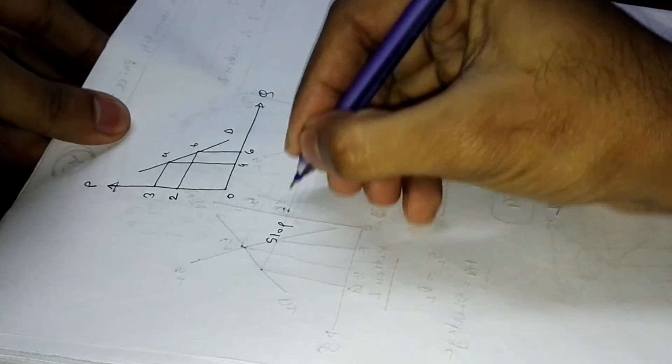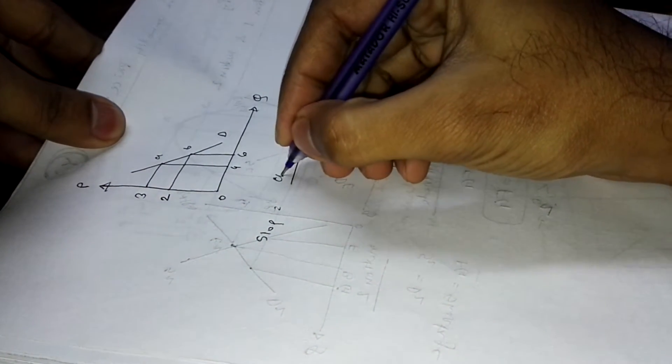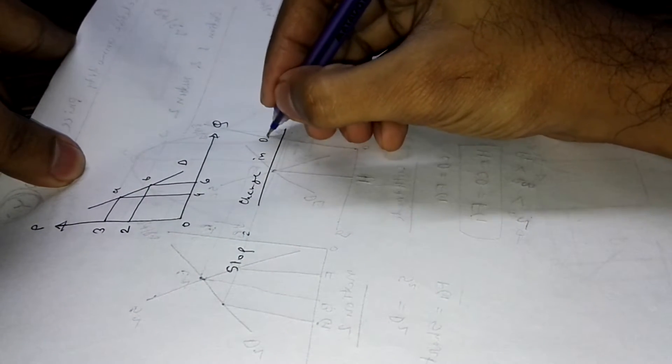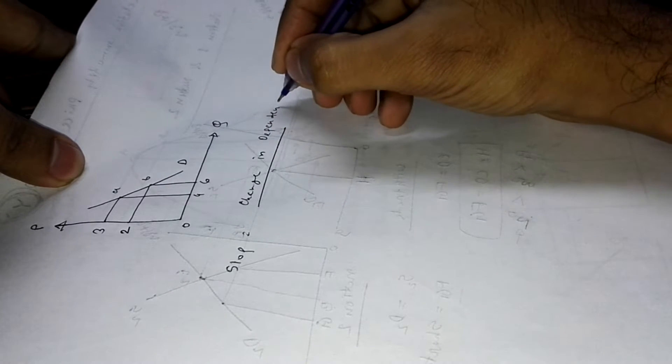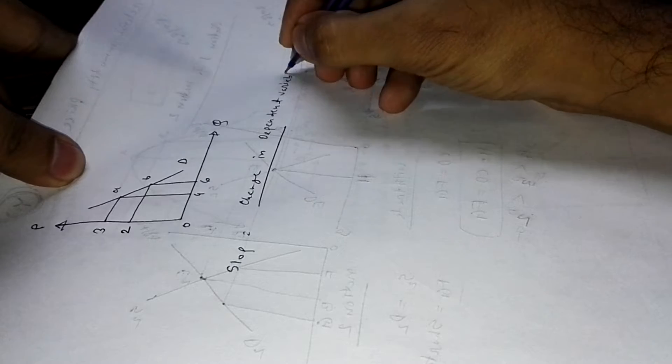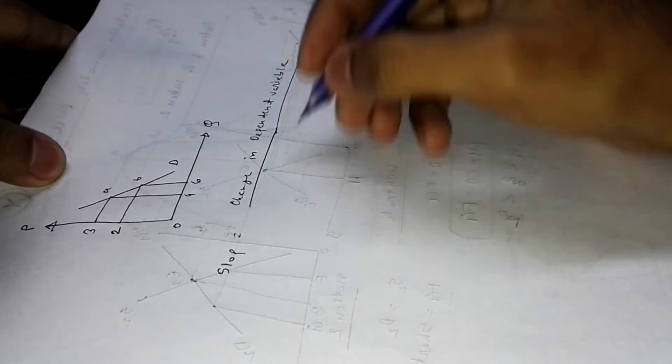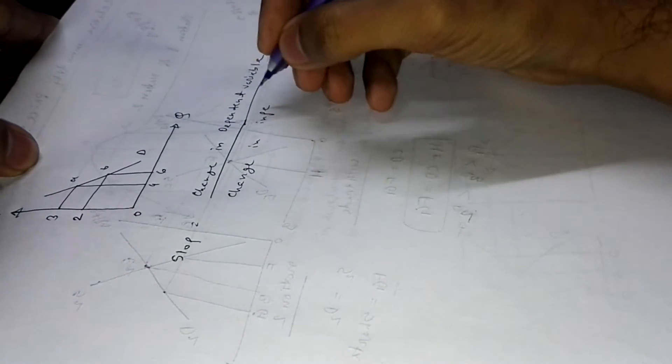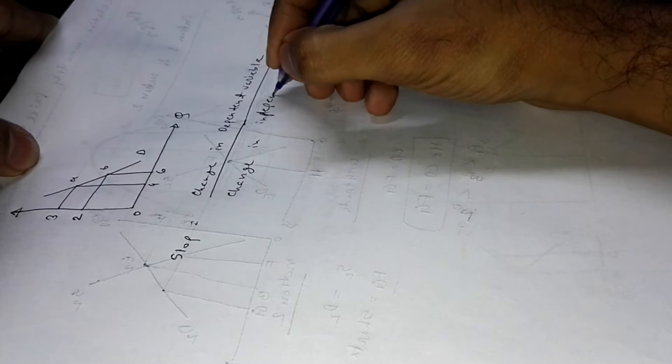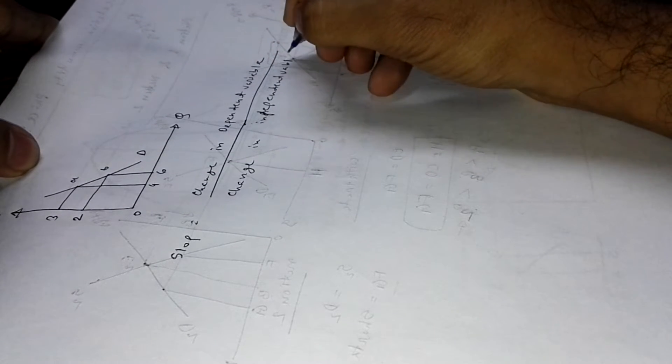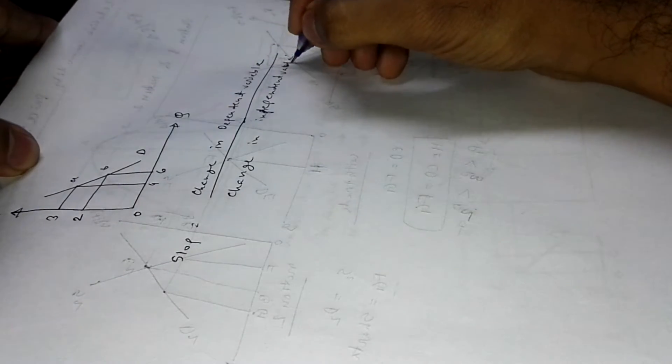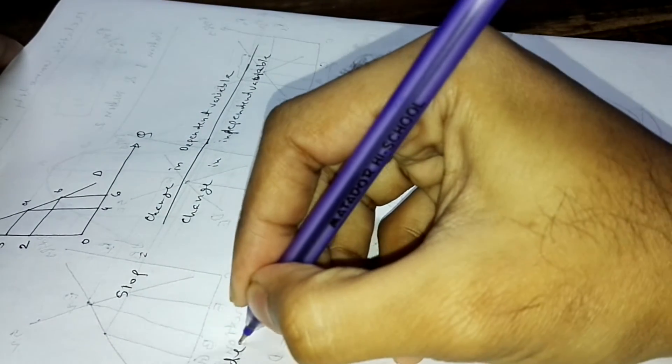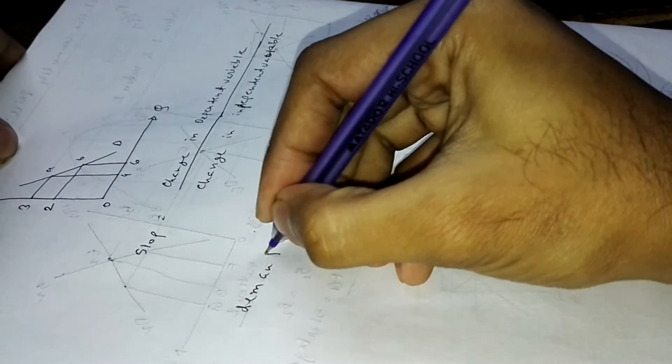Okay, so what is the slope? How to count it? We know slope equals change in dependent variable divided by change in independent variable.